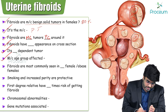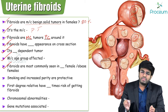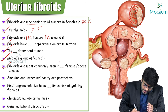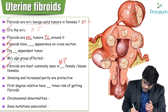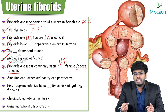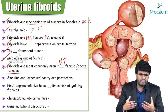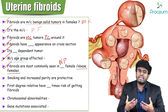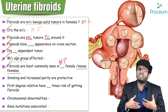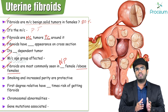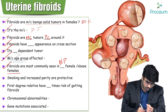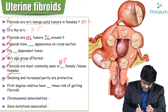Fibroids are most commonly seen in nulliparous females, who are at risk because they are not making a baby. Obese females are also at risk of developing a fibroid. In obese females, a large amount of fat leads to increased conversion of androgens into estrogen — peripheral aromatization — producing more estrogen, which acts as nutrition for fibroid growth, since fibroids are estrogen and progesterone dependent tumors.